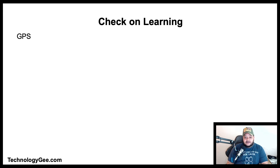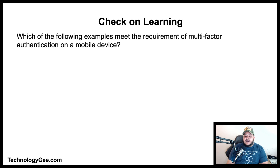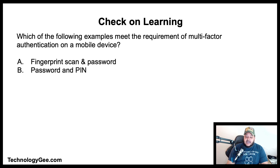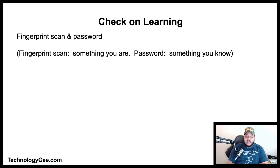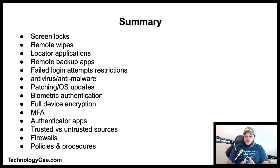Which of the following examples meets the requirement of multi-factor authentication on a mobile device — fingerprint scan and password, password and PIN, face scan and fingerprint scan, or PIN and swipe lock pattern? The correct answer is fingerprint scan and password, because you need at least two pieces of evidence: a fingerprint scan is something you are, and a password is something you know.